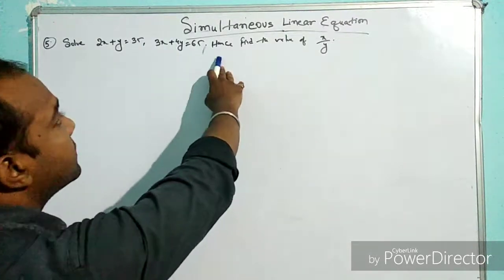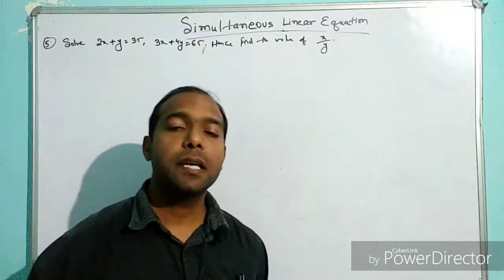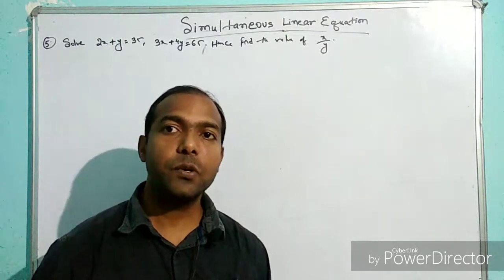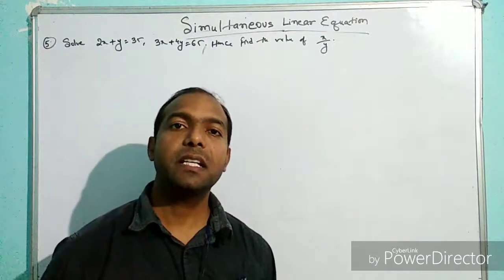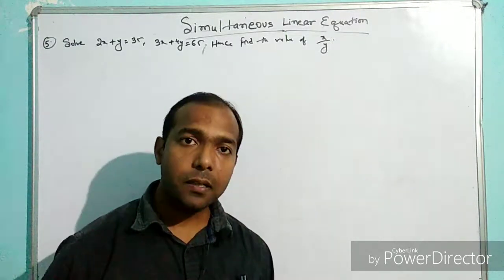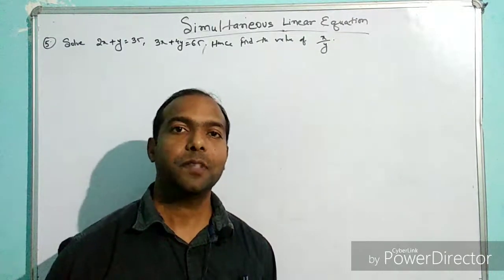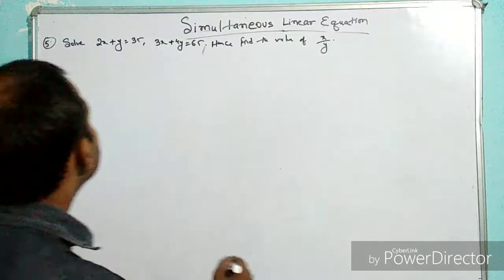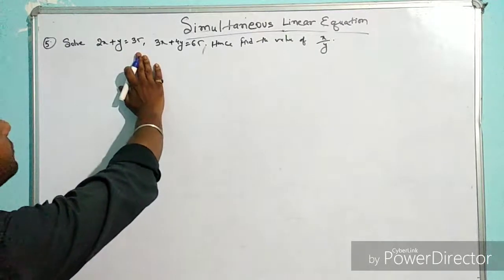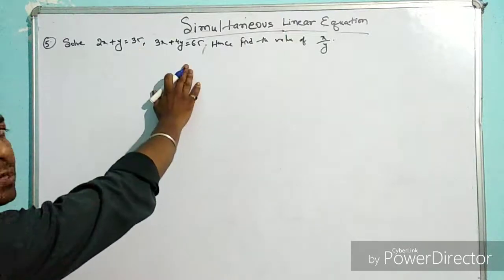The method we're using here is substitution method. As we discussed in previous videos, first we will take a temporary value, then from that we will find the actual value of another variable and solve it further. We have 2x + y = 35 as equation 1, and 3x + 4y = 65 as equation 2.